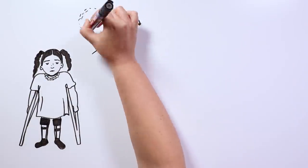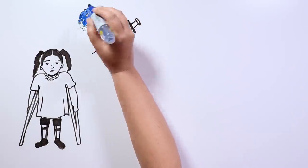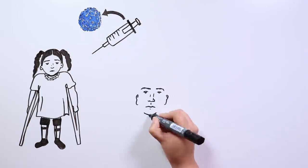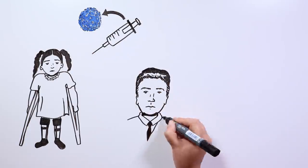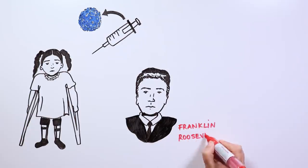There is no cure, but there is a preventive vaccine. It affects the nervous system and can cause paralysis, as it happened to former president of the US, Franklin Roosevelt.